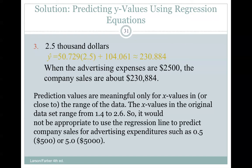So predicted values are meaningful only for x values in or close to the range of the data. The x values in the original data set range from 1.4 to 2.6. So it would not be appropriate to use a regression line to predict values or expenditures such as 0.5 or 500 or 5,000. Those are way far out of our data set, so we're not going to get very valuable data out of that.